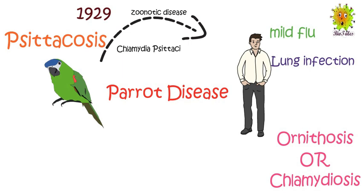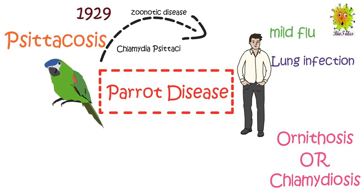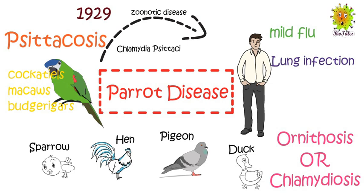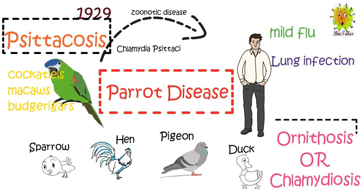Psittacosis was first reported in 1929 when it was observed to be transmitted from a parrot to a human, and thus the disease was named parrot disease. The disease is usually caused by infected parrots like cockatiels, macaws, and budgerigars. However, other birds involved in transmission include sparrows, pigeons, hens, ducks, gulls, and many other species. In the scientific community, the name psittacosis is used when the carrier bird belongs to the family Psittacine.